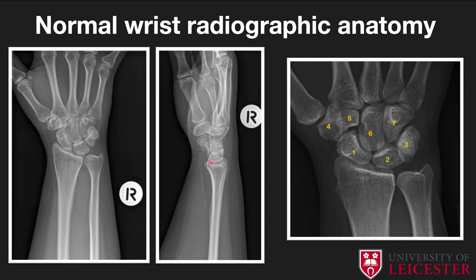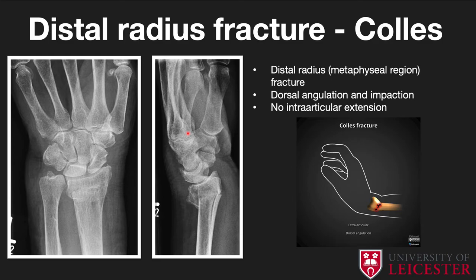On the lateral view, check alignment using the saucer-teacup-egg analogy: the distal radius is the saucer, the lunate is the teacup sitting on it, and the capitate is the egg within the teacup. On the volar aspect you have the scaphoid. The lateral projection can be challenging, so orientate yourself on the AP first, then work out positions on the lateral, remembering the importance of two views.